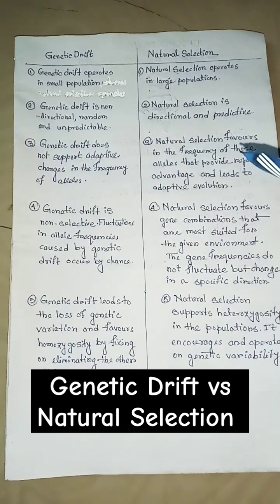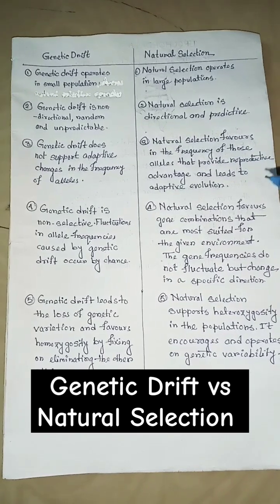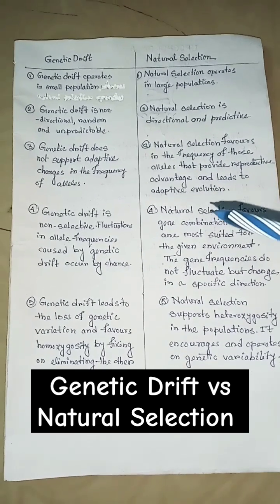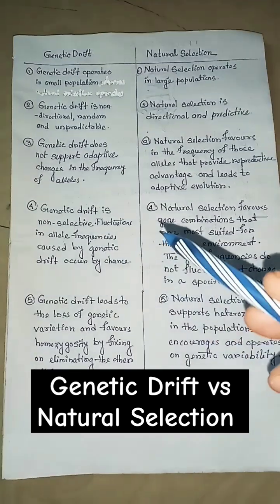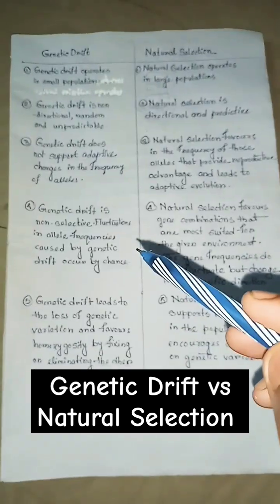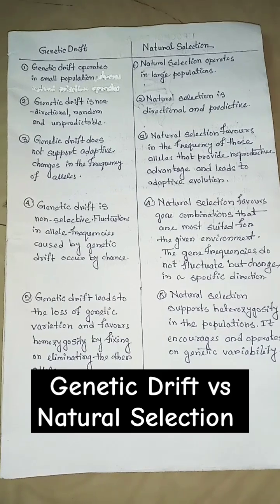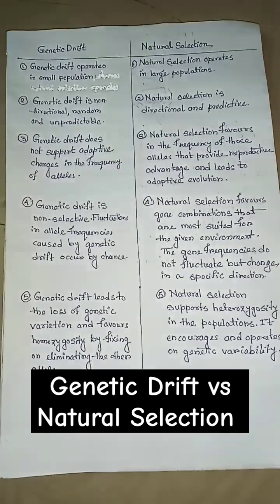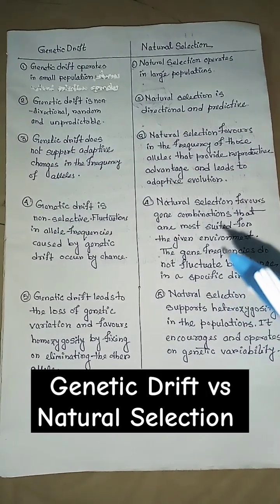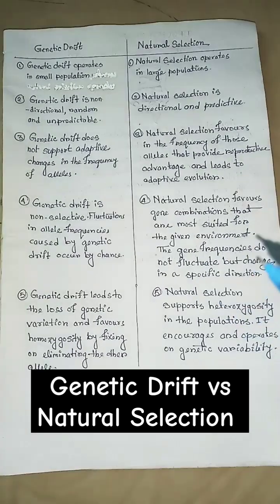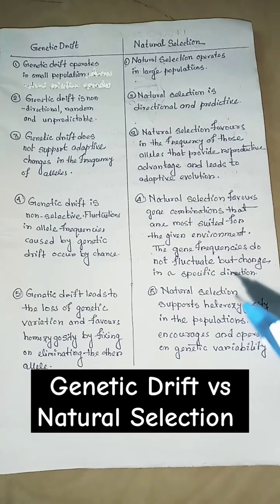Genetic drift does not support adaptive changes in the frequency of alleles. Natural selection favors the frequency of those alleles that provide reproductive advantage, leading to adaptive evolution. Genetic drift involves non-selective fluctuations in allele frequencies that occur by chance, while natural selection favors gene combinations most suited for the given environment, causing gene frequencies to change in a specific direction.